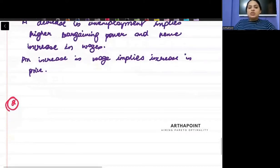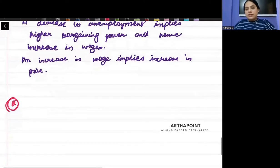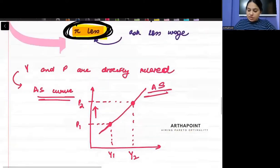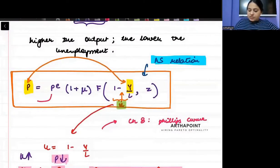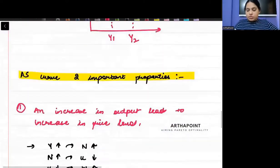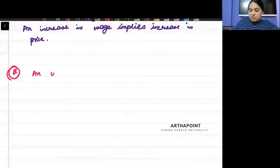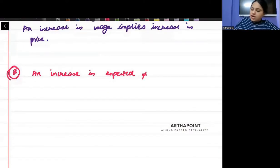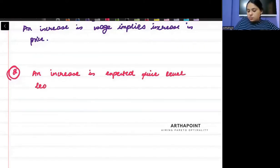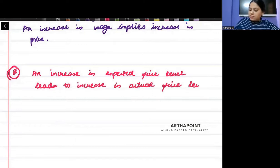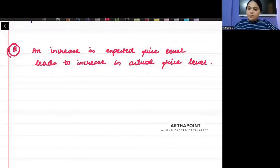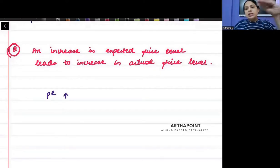This is related to what happens to the price level when expected price level increases. Please write down: an increase in expected price level leads to increase in actual price level. Try to think about this. When expected price increases, it means I think that price will increase in the future.